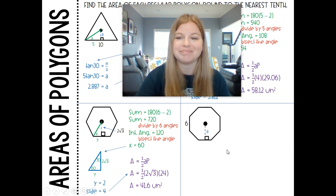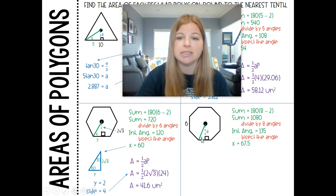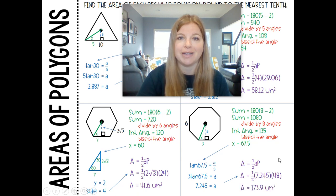Last one, an octagon. Create that right triangle. Angle sum: 180 times 8 minus 2, which becomes 1080. Divide by 8 angles, which gives me an interior angle of 135. Divide that by 2, and I get 67.5. Now I do need to solve for the apothem. I am given a side of 6, which means this little segment here is 3. So tan of 67.5 equals a over 3. Multiply both sides by 3. If this side is 6, then my perimeter is 6 times 8, which is 48. I get 173.9 units squared.